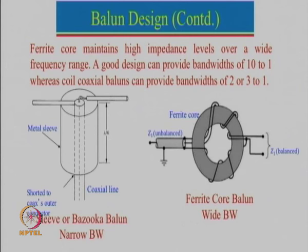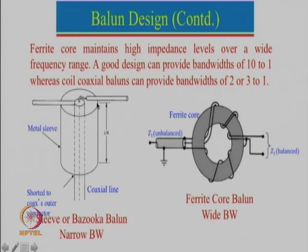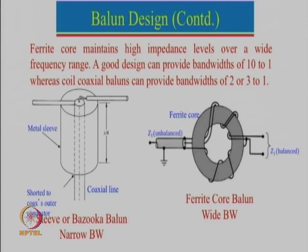Here is another configuration known as a sleeve or bazooka balun. In this case the coaxial cable goes over here, the outer is connected on one side and the centre is connected on the other, but in between a metallic sleeve of length lambda by 4 has been added which is shorted, so that this short will act as an open circuit. Another option is to use a ferrite core balun. All of these things make the design, construction, and cost expensive, which is why many people prefer to use a monopole antenna instead.